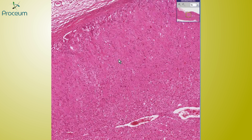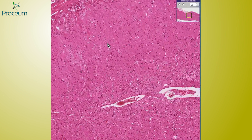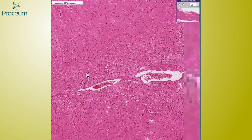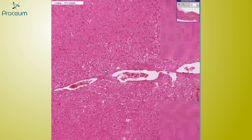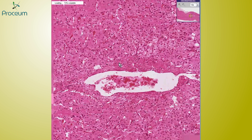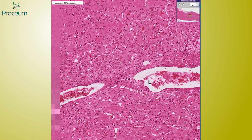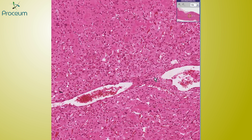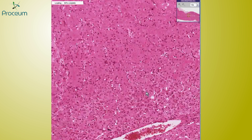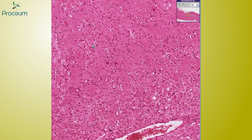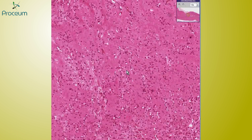Often differentiation between the three layers is not always the easiest, and in this case it's not as easy to differentiate medullary tissue from cortical tissue. But when you get into these large veins lined by thick amounts of smooth muscle, that's the medulla. What is wrong with this adrenal cortex?